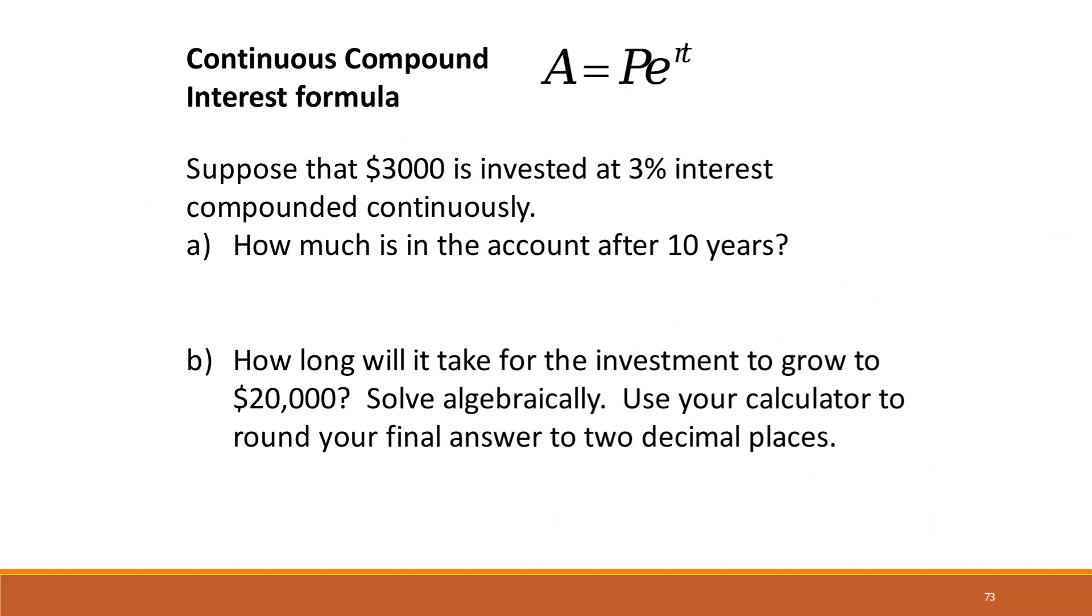Let's look at another one. Suppose that $3,000 is invested at 3% interest compounded continuously. So we have A equals Pe^(rt), how much is in the account after 10 years? So A is equal to 3,000 times e to the 0.03 times 10. That one you should be able to just put straight into any calculator. And you would get $4,049.58.